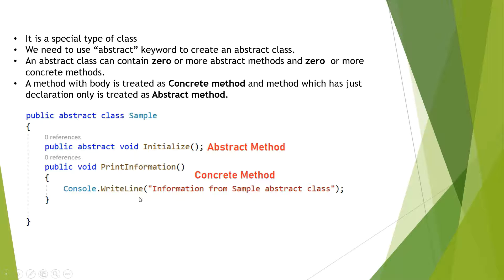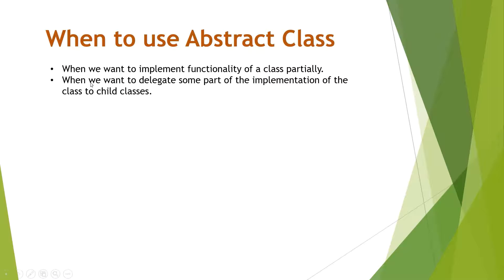So when do we have to use an abstract class? When we want to implement functionality of a class partially, we can go for using abstract classes. When we want to delegate some part of the implementation of the class to child classes, we can use abstract classes.